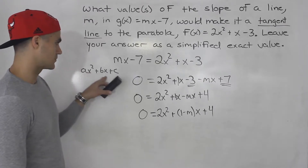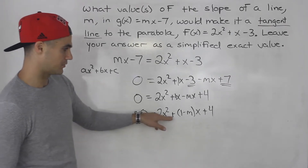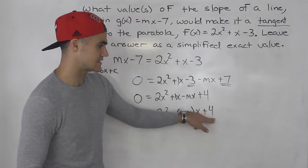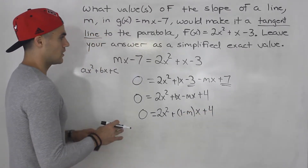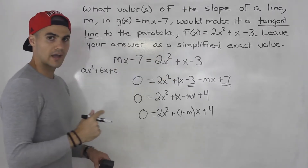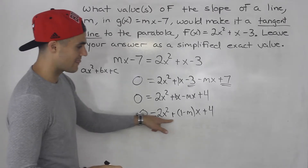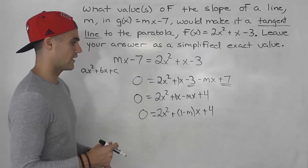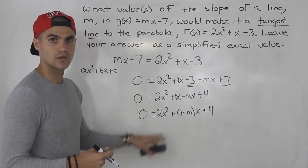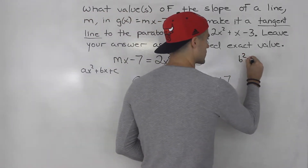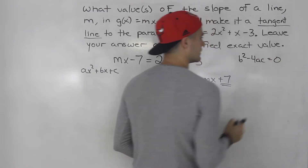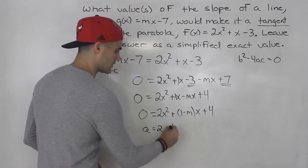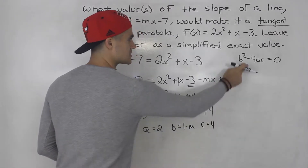Now notice how it's in ax² + bx + c form, where b = (1 − m). Since we know this line and quadratic are going to have one point of intersection — we've brought everything to one side — this quadratic equation is going to have one solution. When a quadratic equation has one solution, the discriminant b² − 4ac equals 0. So we take a = 2, b = (1 − m), c = 4, and plug it in.